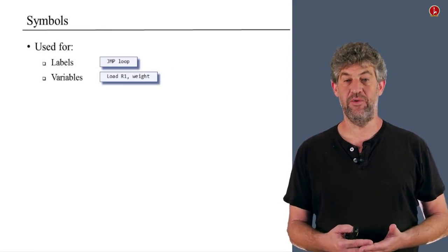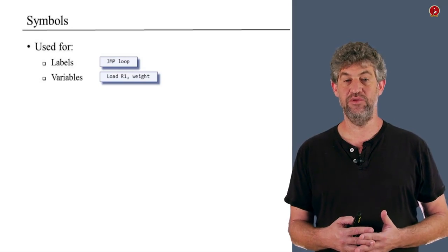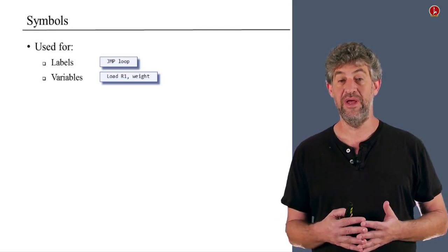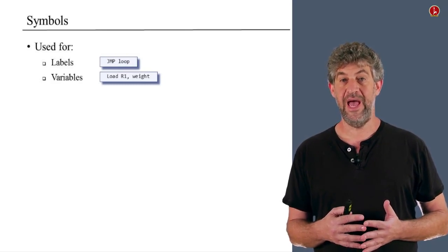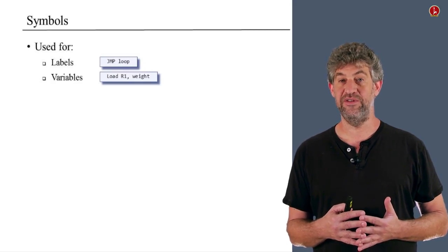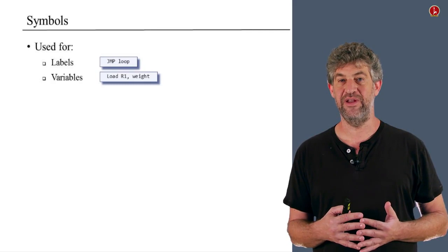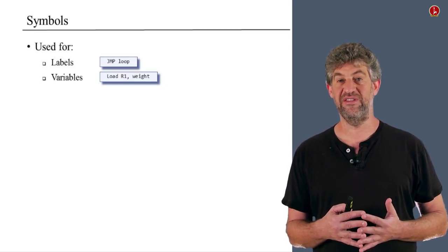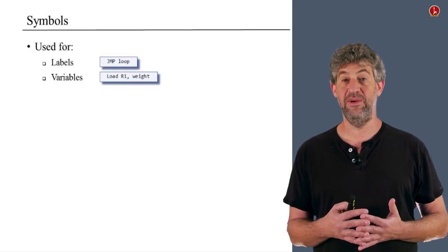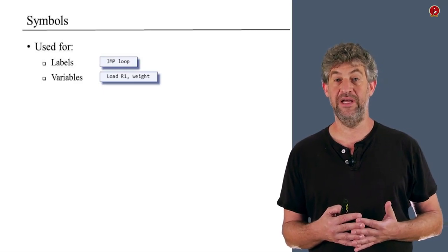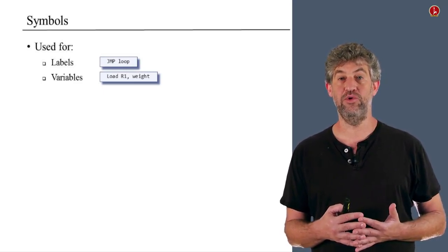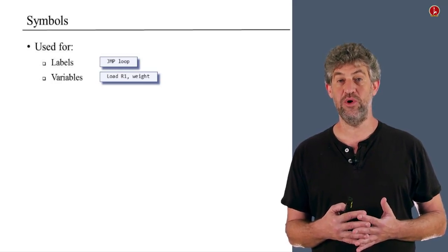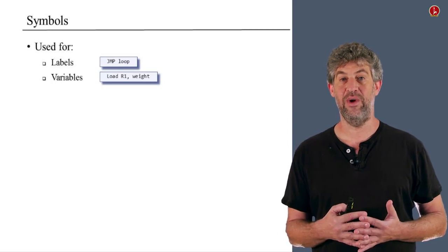So far we've described the basic operation of the assembler. Now there's one extra complication: handling symbols. One of the major services that assembly language gives a programmer is the ability to use symbols rather than direct numbers — for two different types of things. One is labels in the program: to jump to a certain part you give it a name rather than hard-coding the address. The other is giving variables a name rather than referring to an exact memory address.